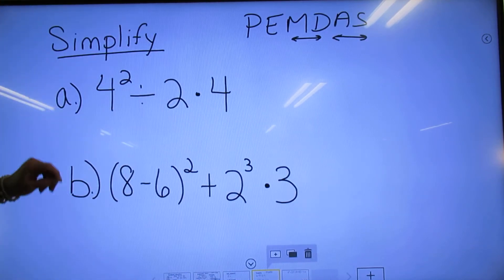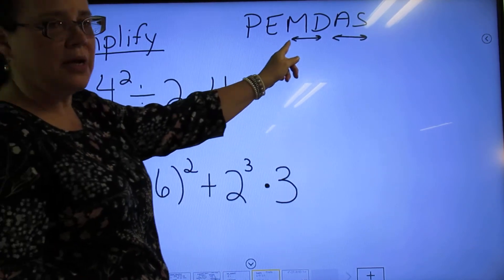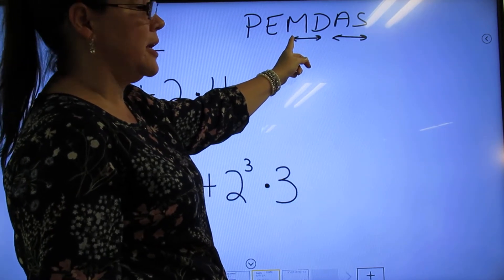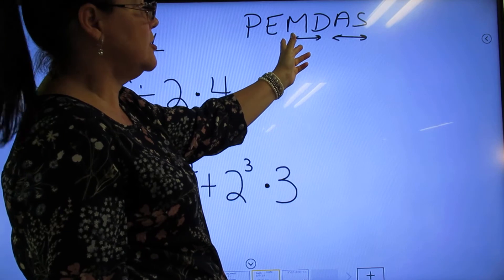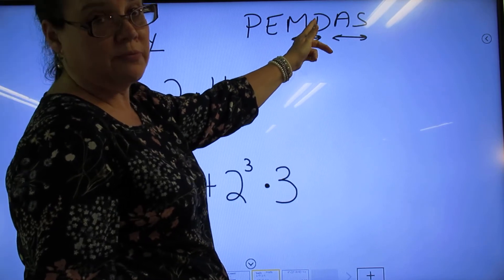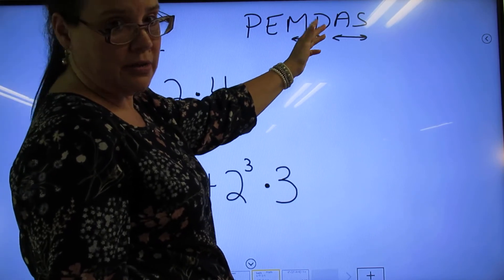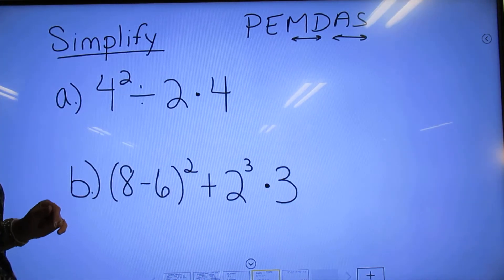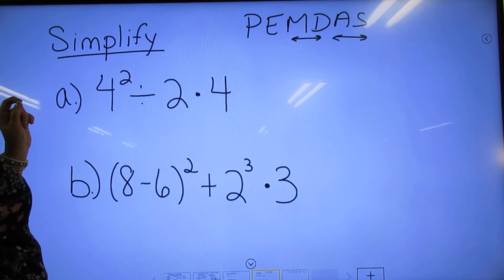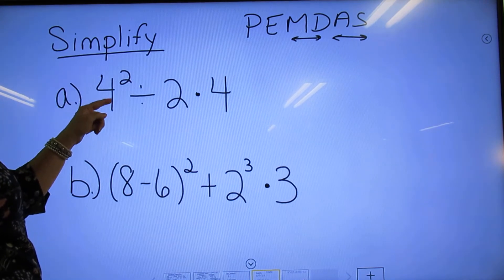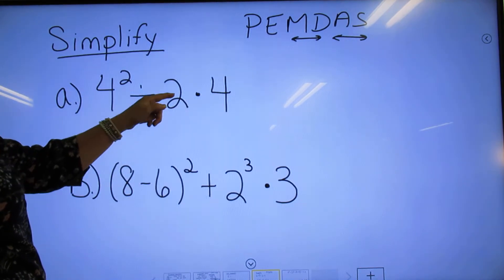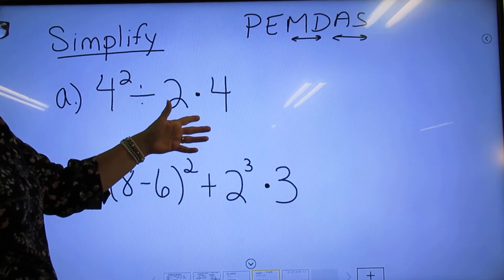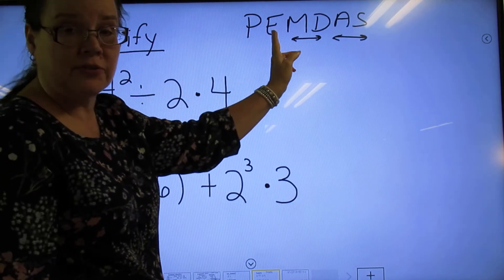So our next slide. We've got to write PEMDAS on our paper. That means if division comes before multiplication, we can do division before multiplication, or if multiplication comes before division, we can go left to right with either one. Same thing with addition and subtraction. Right now we have 4²÷2×4, and division comes before multiplication, and that's okay to do because it can be left to right.